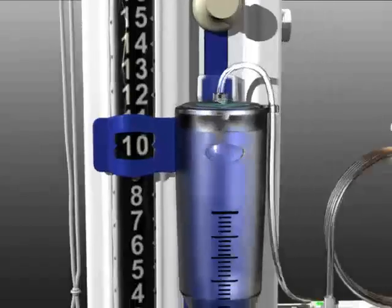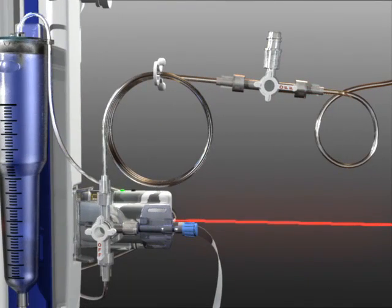Once setup is complete, the system can be open to drainage. Rotate the patient line and main system stopcocks so fluid can flow from the patient to the drip chamber.